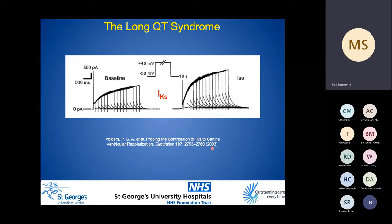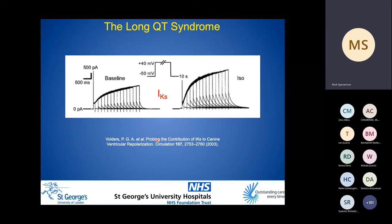The IKs current is recruited during higher heart rates because its molecular correlate pore is slow to both activate and deactivate, though activation is quicker with beta-adrenergic augmentation. Patch clamp recordings from canine cardiomyocytes show IKs building up through repeated stimulation, and augmentation with isoprenaline. For this reason, deficiencies in IKs and arrhythmias in LQT type 1 are classically uncovered during exercise or stress.